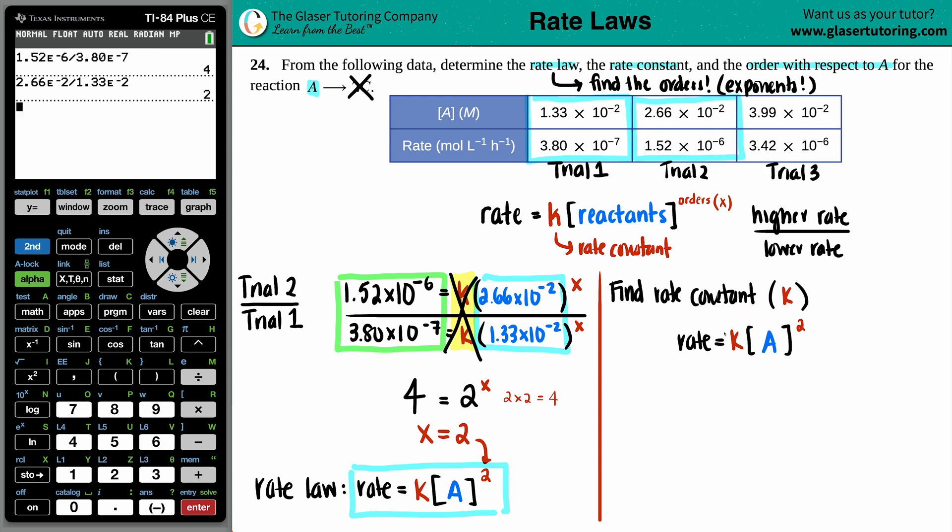now, since we know that, we can technically use any trial and plug in our values to solve for K. Now, this is kind of teacher or professor specific because some teachers might want you to find the K for every trial and take the average. I've seen teachers or professors that take the last trial. But, I mean, generally, they're so close to one another that it really should, you should get the same number, regardless if you take trial 1, 2, or 3. So, let's mix and match. I used 1 and 2 to find the rate law. So, maybe I'll use trial 3 to find the rate constant.